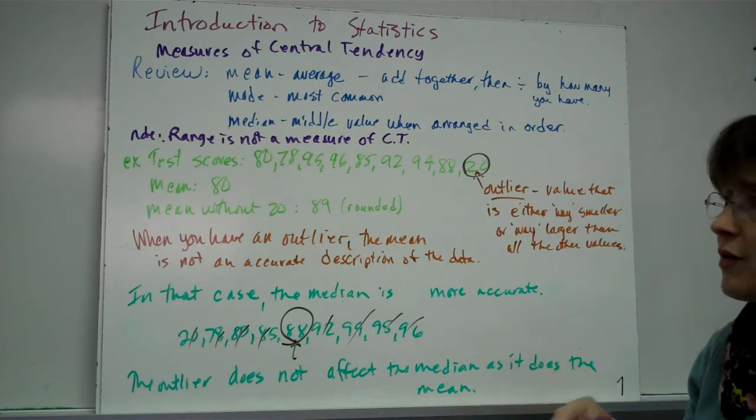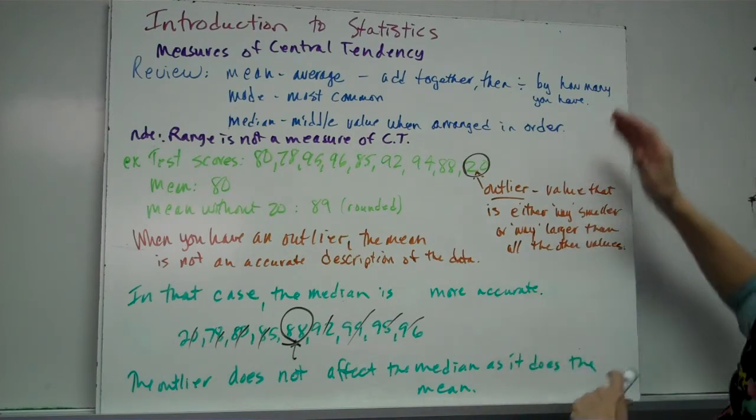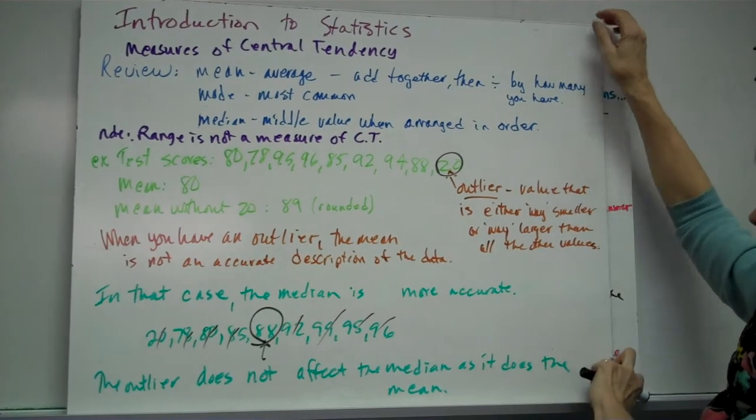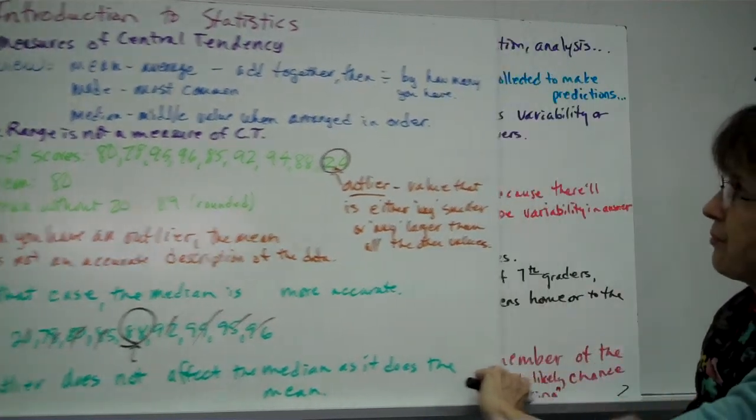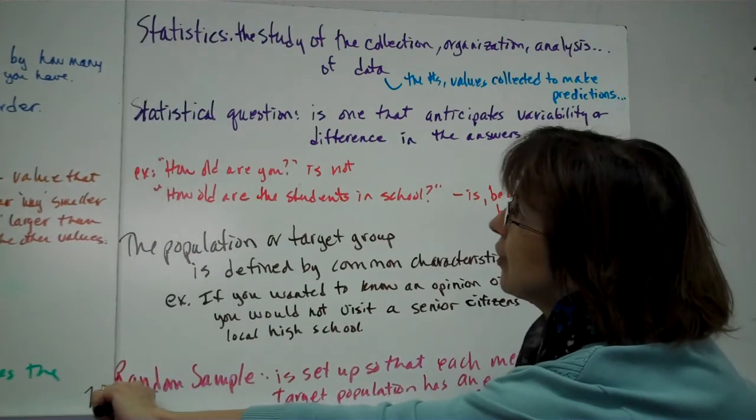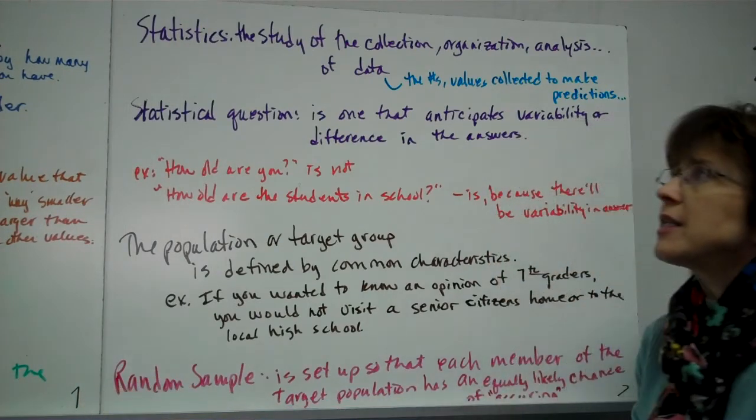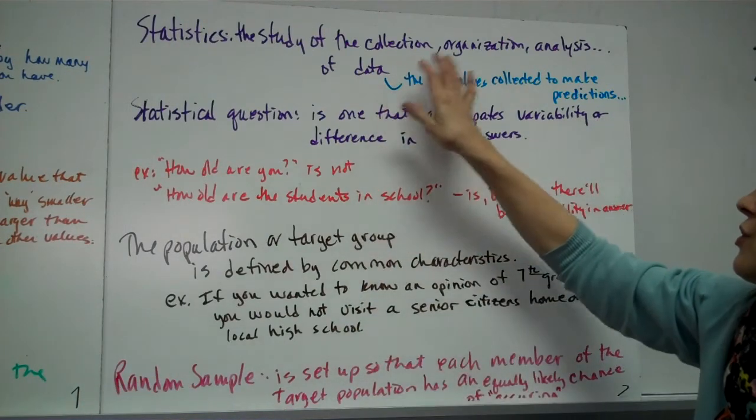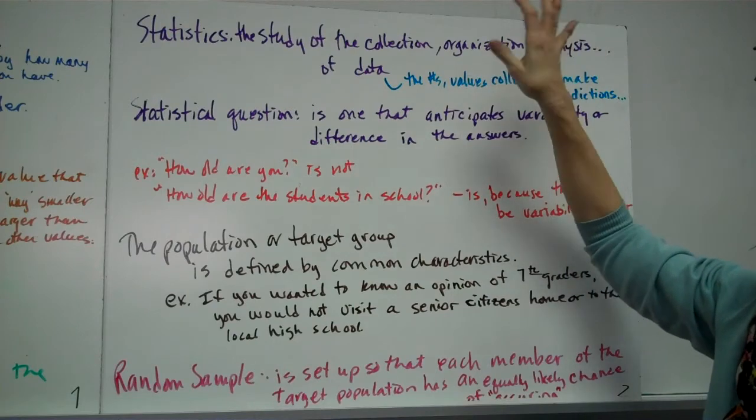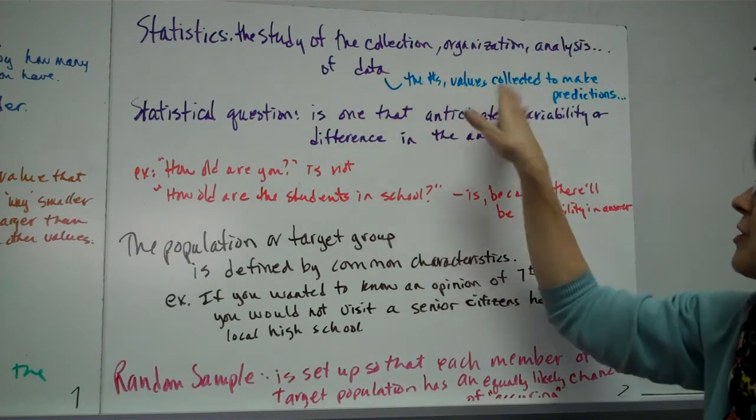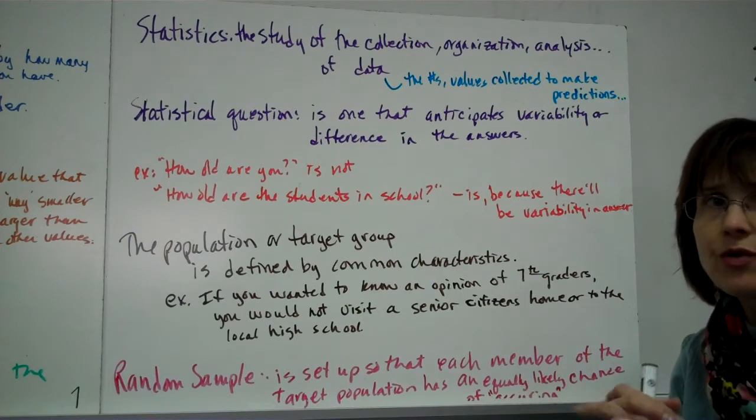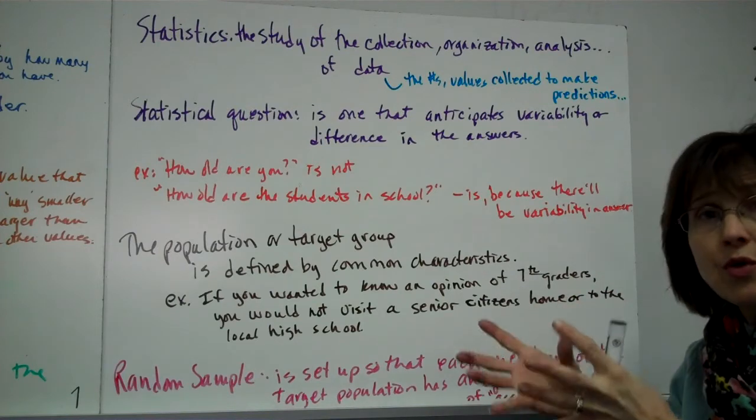So the outlier does not affect the median as it does the mean. So we're going to start thinking of the mean isn't the average, isn't the one-all, be-all of what we should get for our value, for our description of data. Okay, so statistics basically is a study of a collection, organization, analysis, and you can do a lot more of the things, of data. And data is simply the numbers of the values you collect to predict something or to see what's going on.